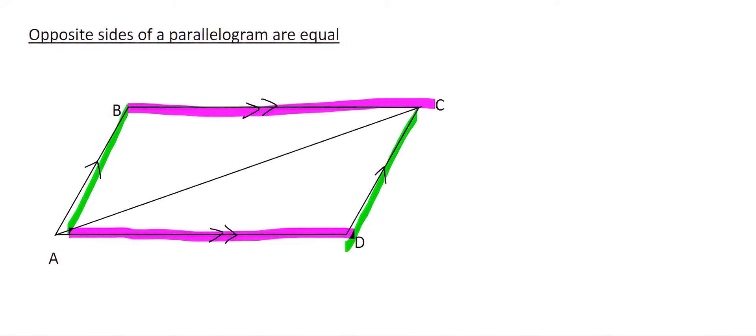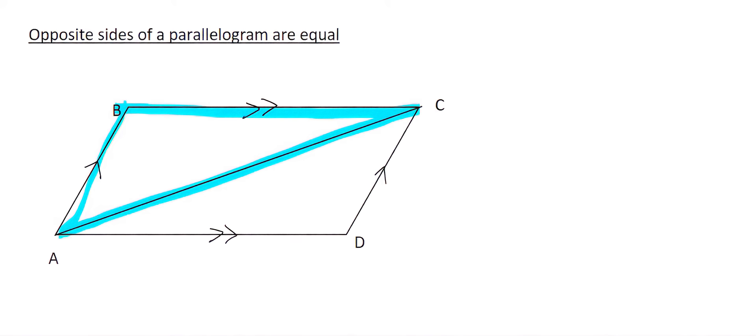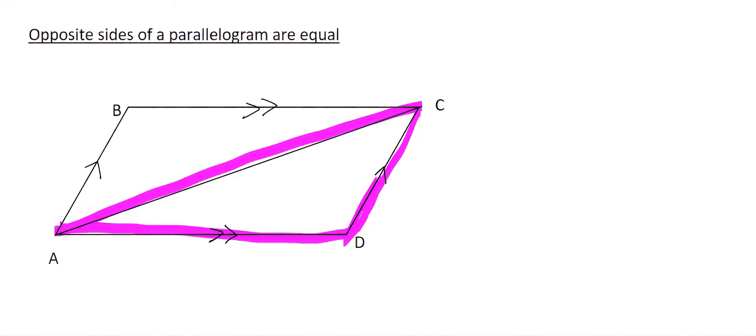But now remember, we've just gone through a whole series of videos on congruency. So imagine you could prove that this triangle is the same as this triangle. Well then, what that would mean is that this side is going to be the same as that side, and that side is the same as that side. So congruency is the key. So let's go for it.